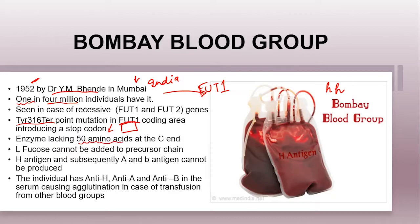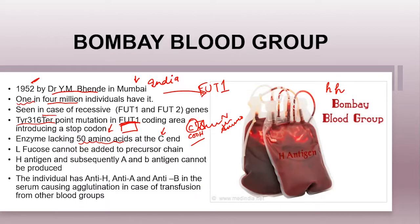This mutation ultimately introduces a stop codon in the coding region, making an enzyme product that lacks 50 amino acids along the carboxyl end of the protein. As you know, in an amino acid chain there is a carboxyl end (C-terminal) and an amino end (N-terminal). Due to the point mutation at Tyr316Ter in the FUT1 gene, the enzyme produced — which is fucosyltransferase — is truncated at the C-terminal end.